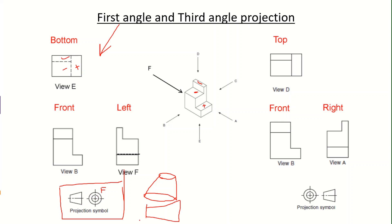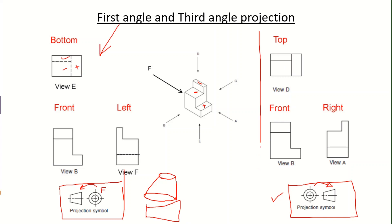In the third angle projection method, the right side view of the conical frustum is shown to the right side of the front view. The projection symbol indicating whether it is a first angle or third angle projection system is noted in the title block of the engineering drawing.